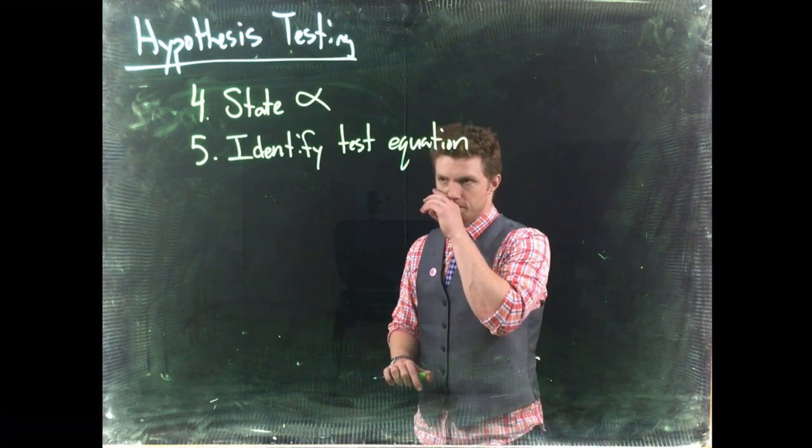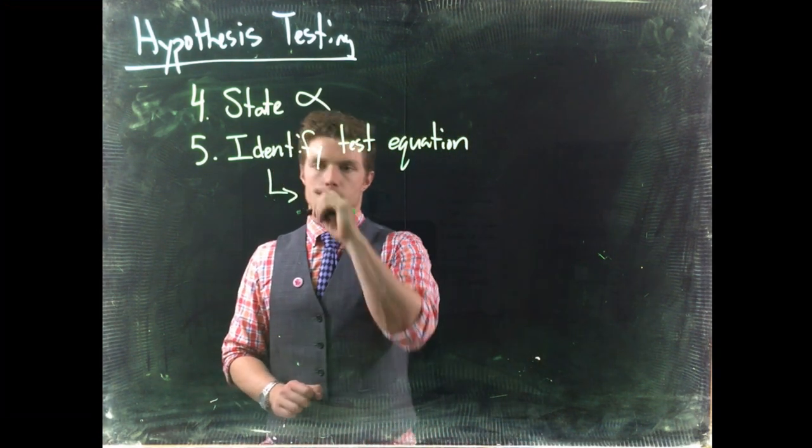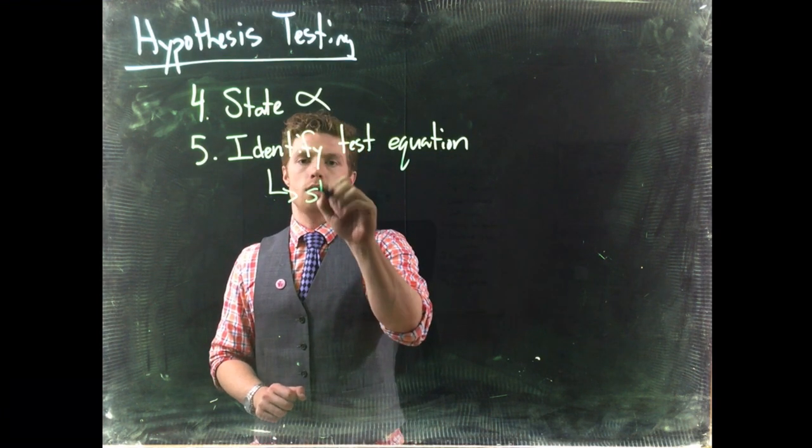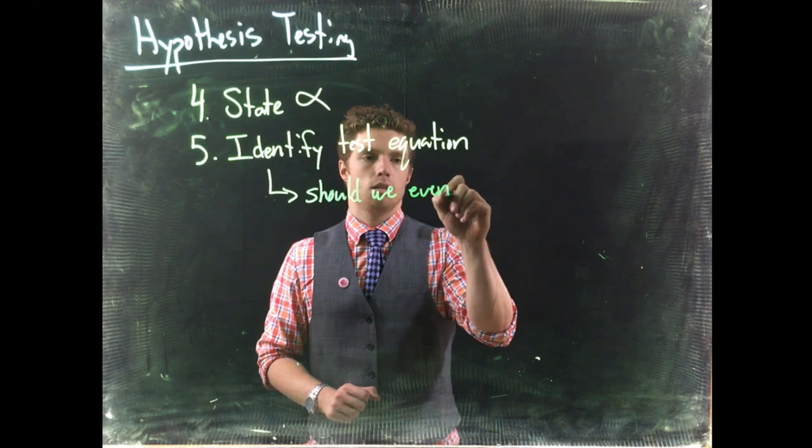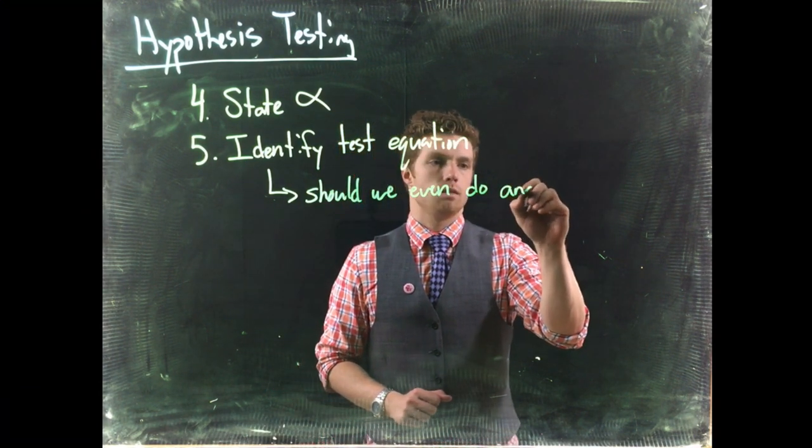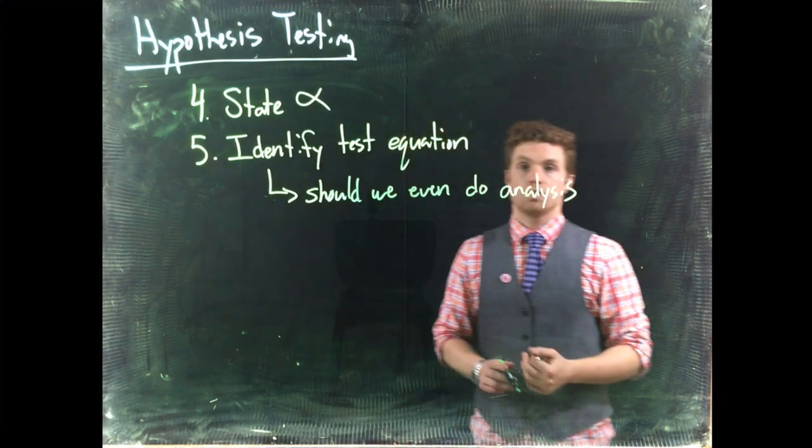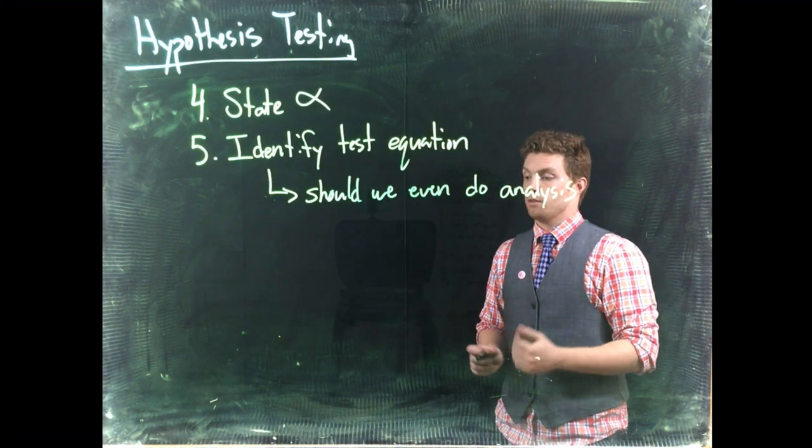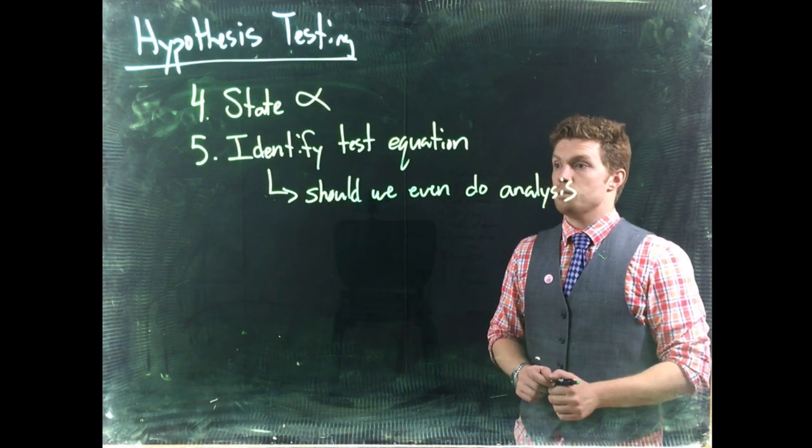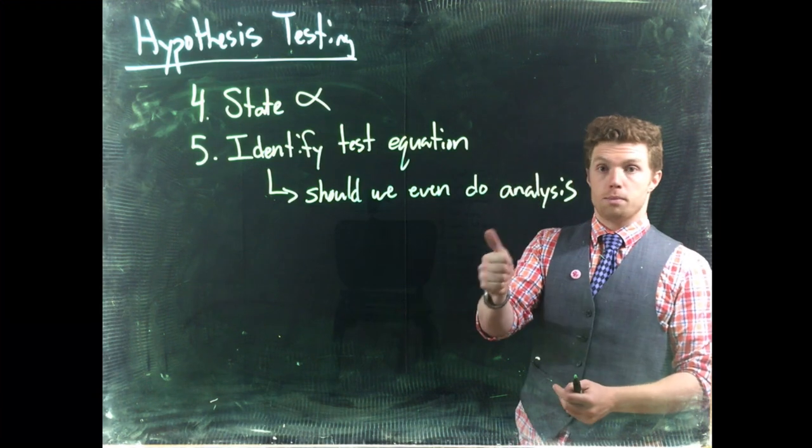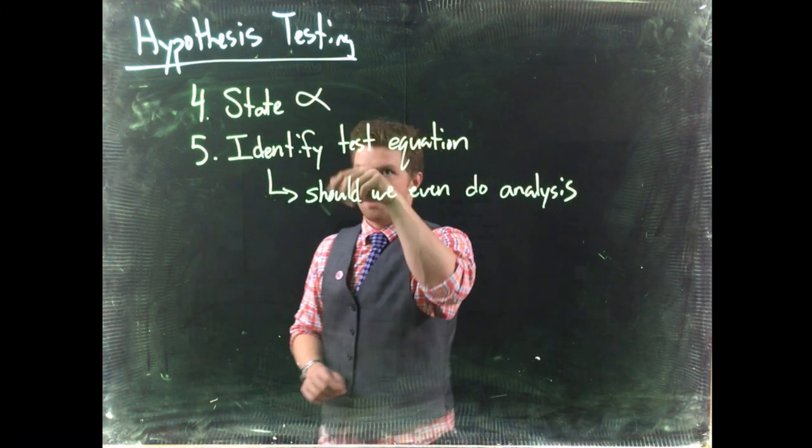We need to identify our test equation and, while we're at it, determine should we even do analysis. We're still bound by the restrictions of the central limit theorem. To do any of these tests, we need to make sure that either the original population is normally distributed or that we have a large enough sample size.